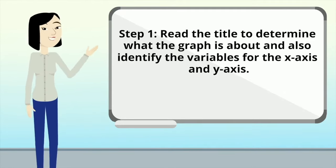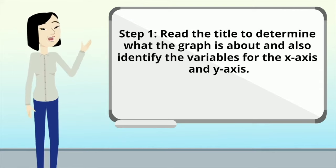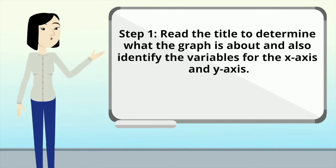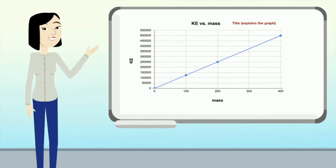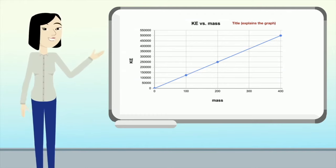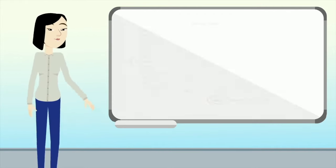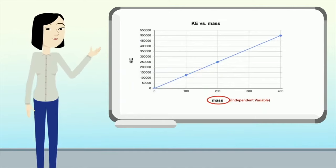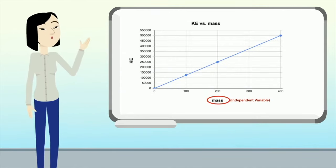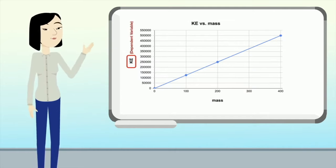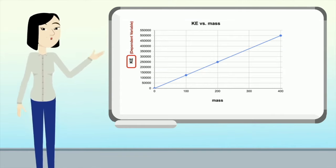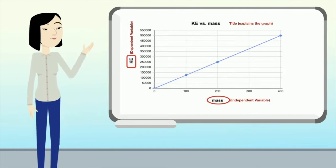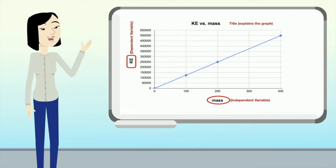In step one, we're going to read the title to determine what the graph is about and also identify the variables for the x-axis and the y-axis. The title here at the top says KE versus mass. At the bottom, the x-axis says mass — that's the independent variable. And on the side, the y-axis says KE — that's the dependent variable.